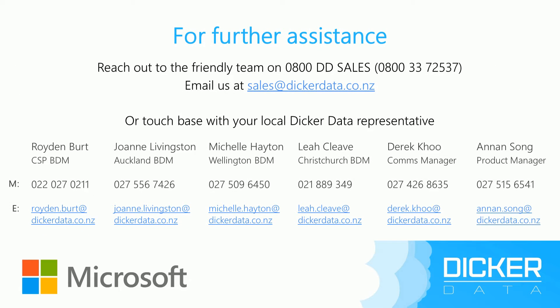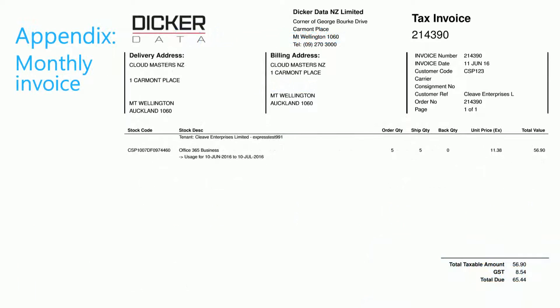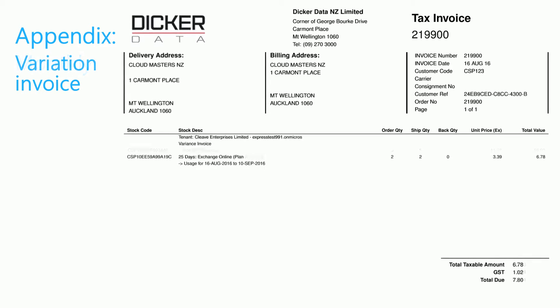And that's it for our billing processes. If you need further assistance, you can always reach out to our friendly team on 0800 DD Sales or email the team at sales@dickerdata.co.nz. We also have a selection of local Dicker Data representatives across Auckland, Wellington and Christchurch who are always happy to help. In the next couple of slides, you'll also see some monthly invoice examples as well as a variation invoice example. Feel free to reach out to the team at Dicker Data for more assistance. Thank you for listening.